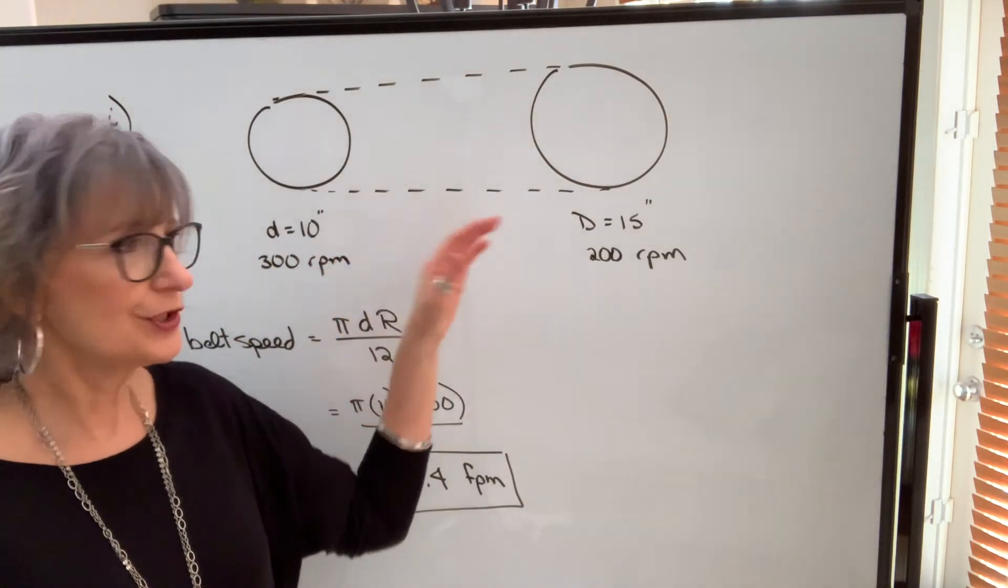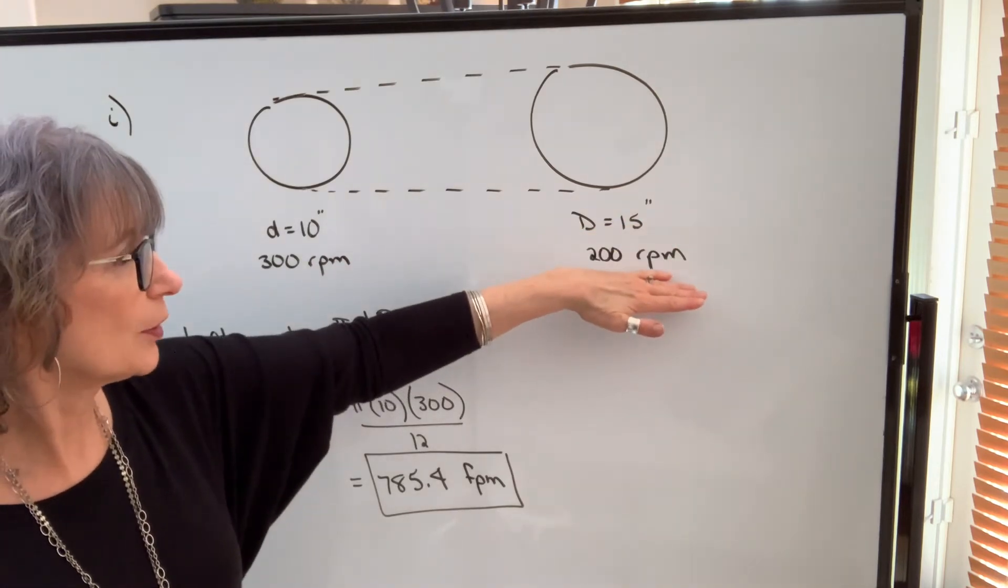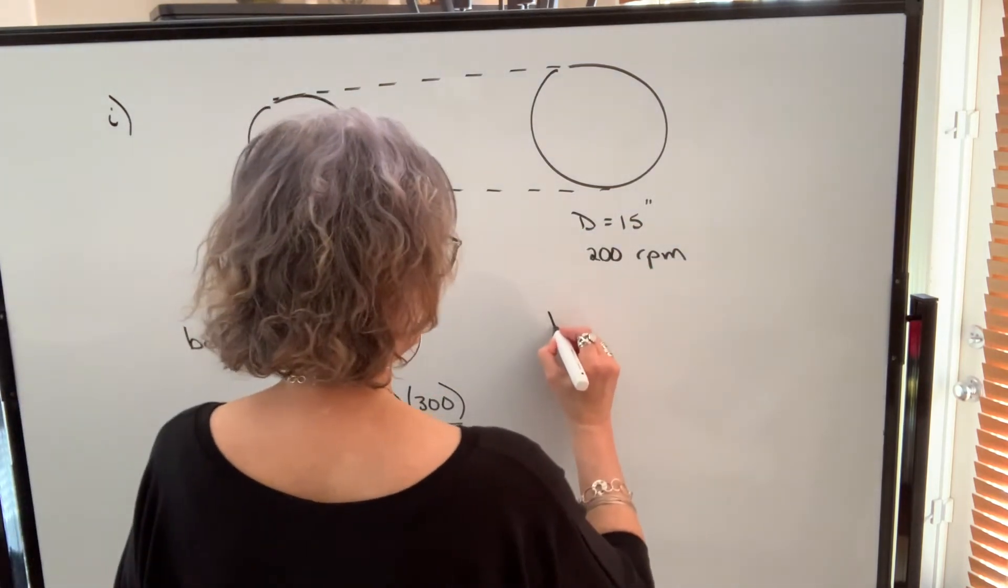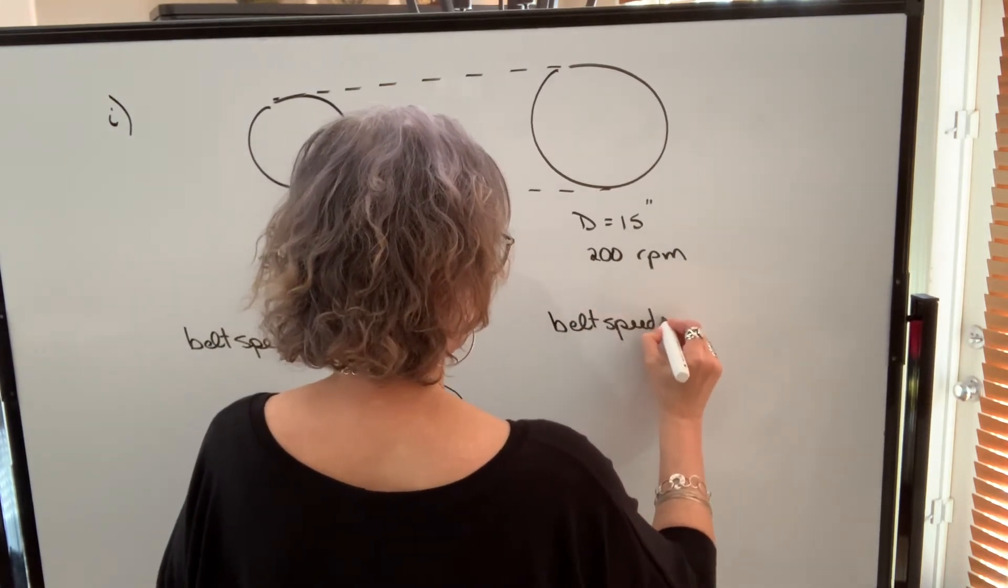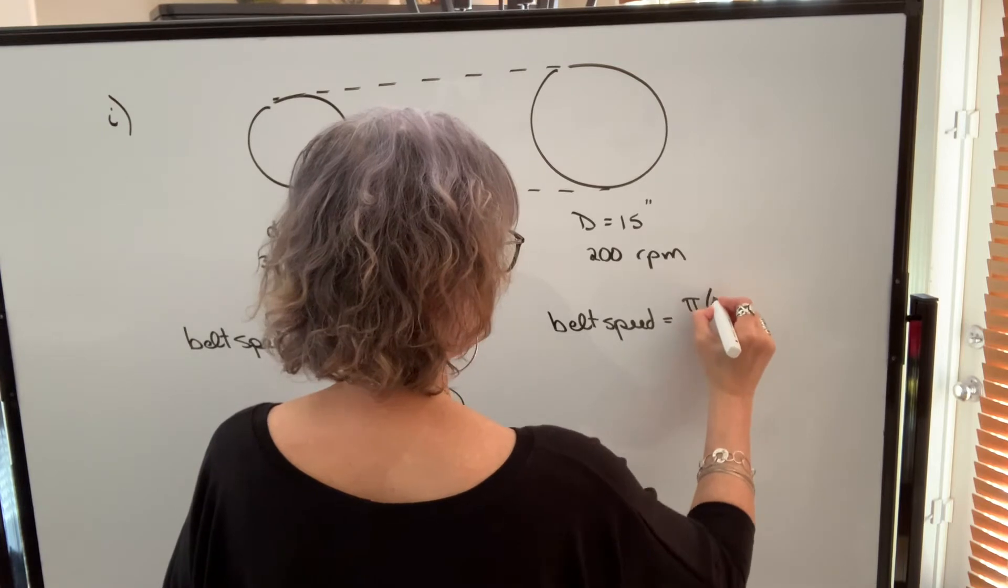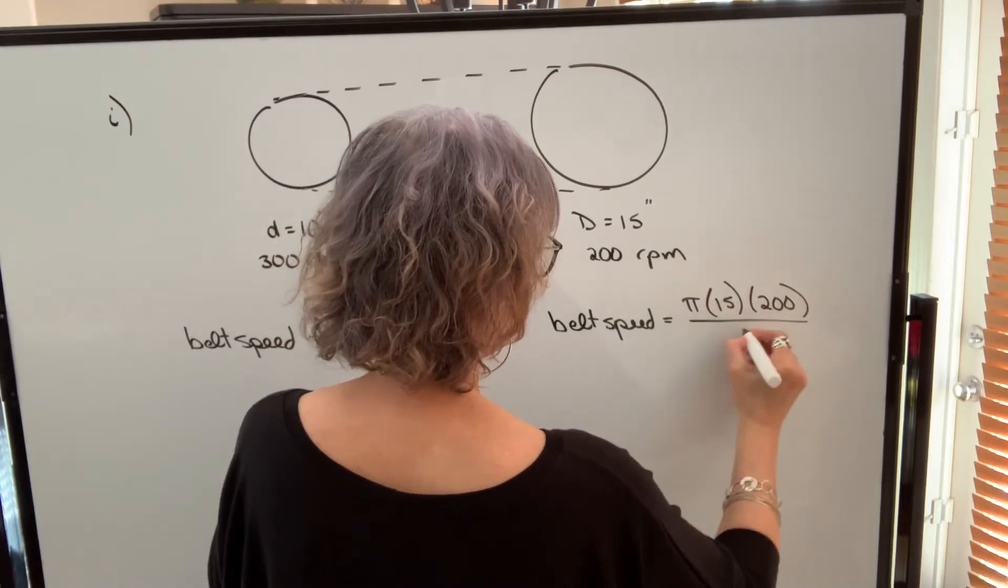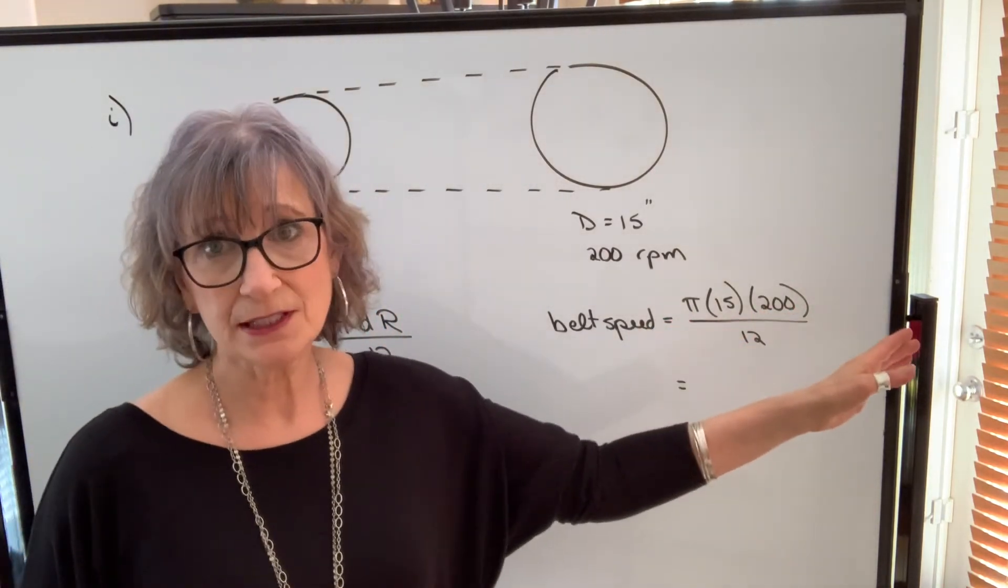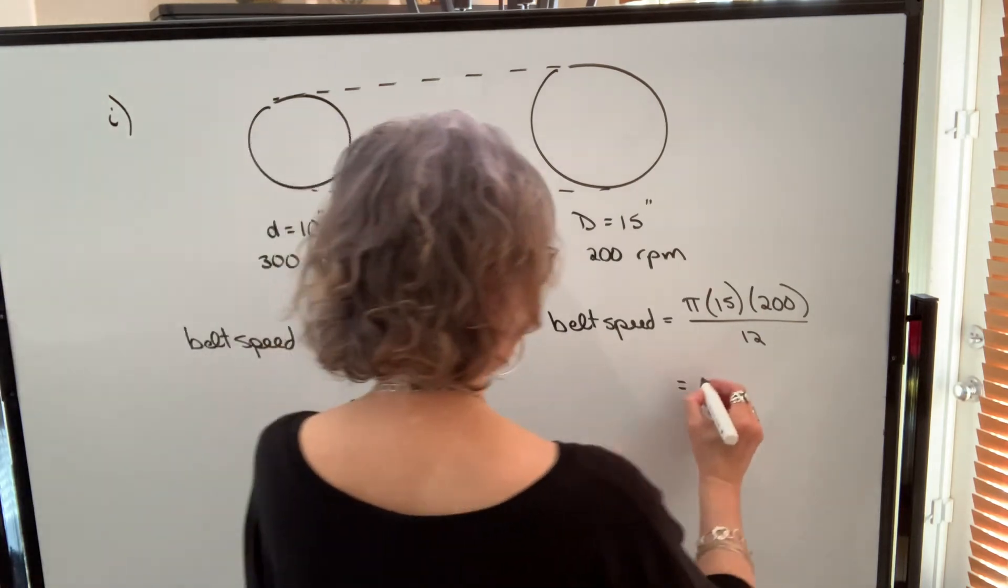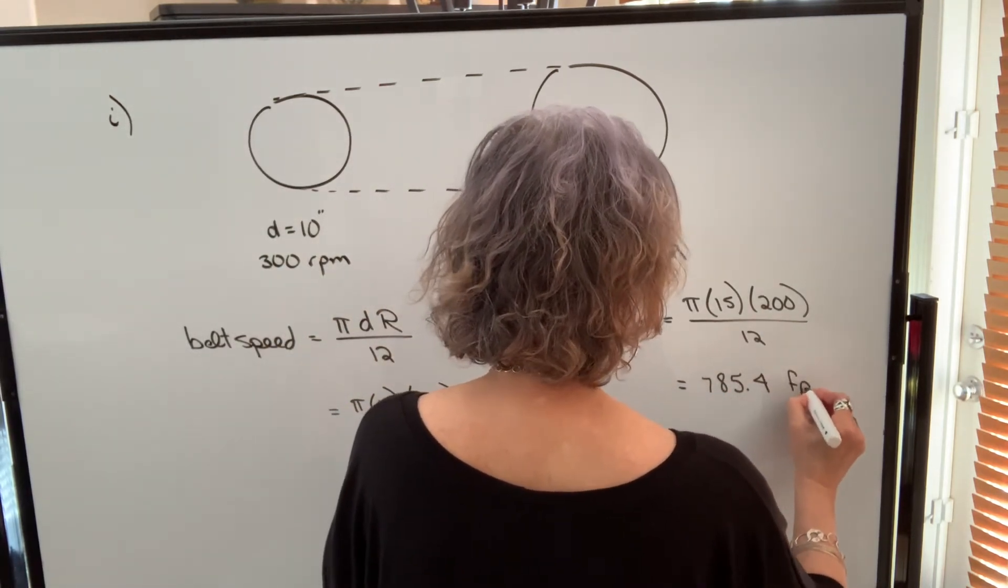Let's redo the calculation, this time using this pulley, 15 inch diameter and RPM of 200. So my belt speed will be equal to pi times 15 times 200 divided by 12. Again, using the pi button on my calculator, when I punch this in, I get a value of 785.4 feet per minute.